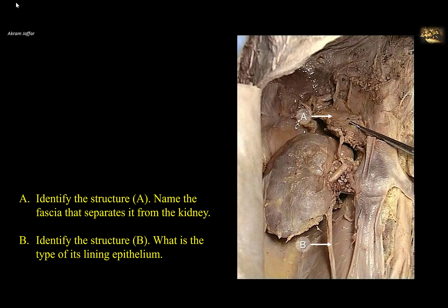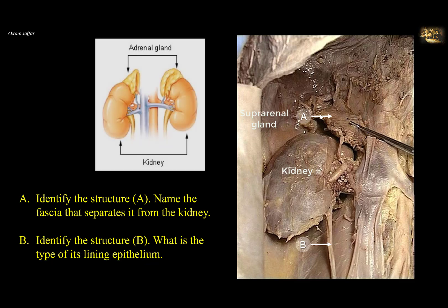Structure A is the suprarenal gland — this is the right suprarenal gland. Note its relation to the upper pole of the kidney; it is pyramidal in shape. This is opposed to the crescentic shape of the left suprarenal gland, which is related not only to the upper pole but also to the medial border of the kidney because of its crescentic shape.